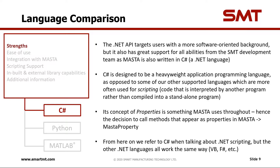The .NET API targets users with a more software-oriented background, but it also has great support for all abilities from the SMT development scene. MASTA is also written in C#, which is another .NET language. We also have VB.NET, but for the purposes of this, I'm just going to talk about C#. C# is designed to be a heavyweight application programming language, as opposed to some of our other supported languages which are more often used for scripting. Its concept of properties is something that MASTA uses throughout, hence the decision to call methods that appear as properties in MASTA 'master properties.' So anything from the length of a shaft or the width of a bearing in MASTA will translate to a master property in scripting. When talking about .NET scripting, other .NET languages all work the same way — VB, F#, et cetera.